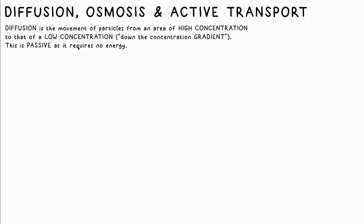Diffusion is the movement of molecules or particles from an area of high concentration to an area of low concentration. We say they move down the concentration gradient — like a ball rolling down a hill, it'll do it by itself.